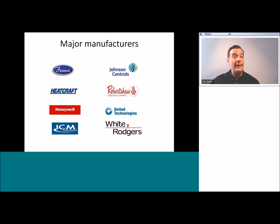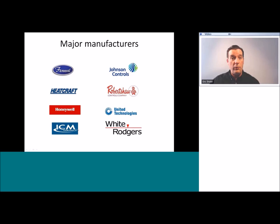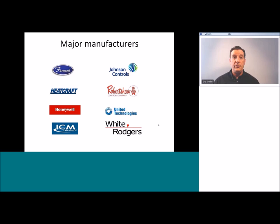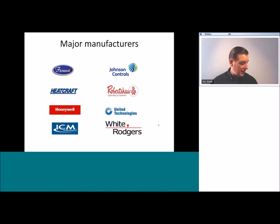United Technologies is the parent company for Carrier Corporation, and UTI had a division that made electronic controls — you'll find a lot of UTI control boards in Carrier products, as well as a lot of ICM controls in Carrier and their related family of products. White Rogers was absorbed by Emerson Climate Technologies, which has been quietly buying up many HVAC-related OEM suppliers. They own White Rogers, Browning belts, Copeland compressors, and Alco flow controls, among other brands, all homologated into the Emerson Climate Technologies company.